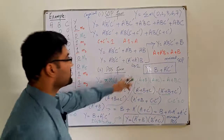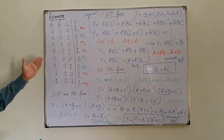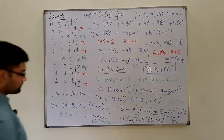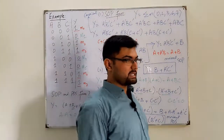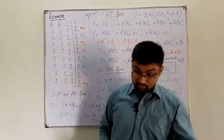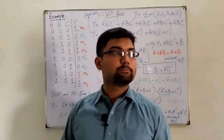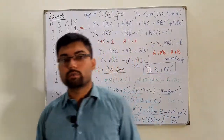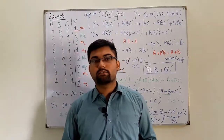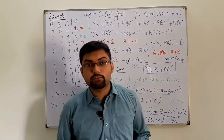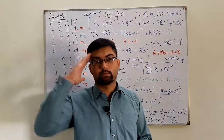This is the minimal sum of product form and this is the minimal POS form for the same truth table. I believe this one example is enough for the clarification of concepts. See the book, solve examples, and if you have any questions you may ask. I'll be ending this lecture here — see you in the next lecture very soon, inshallah. Take care of yourselves and everyone around you. Goodbye.